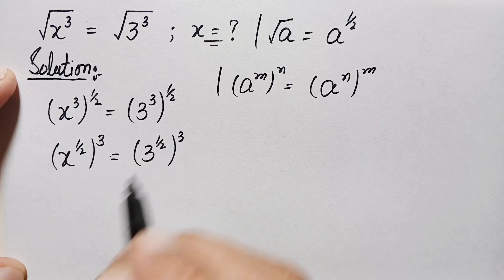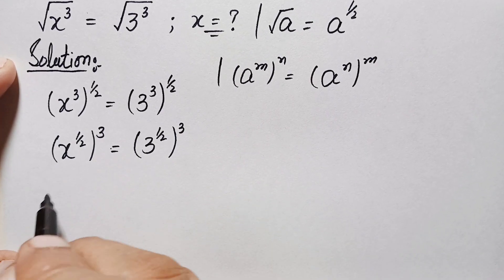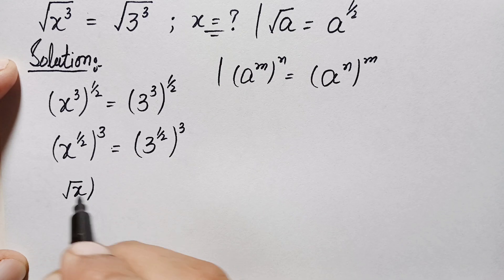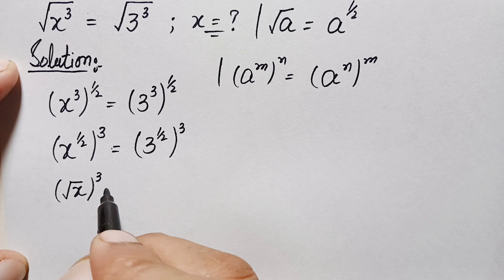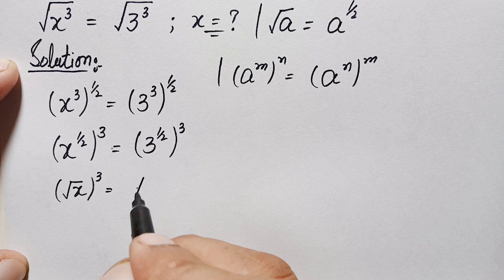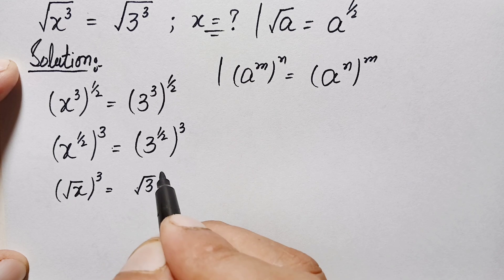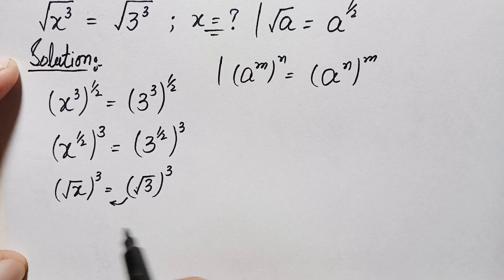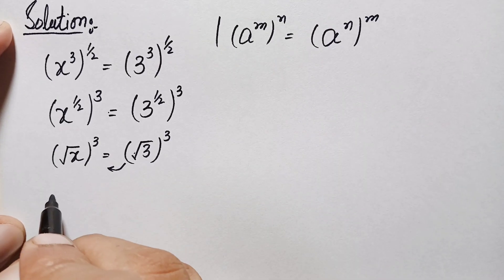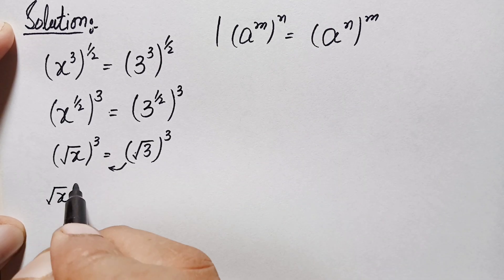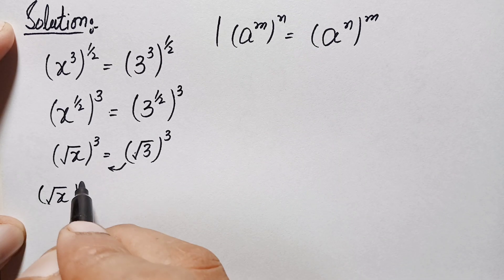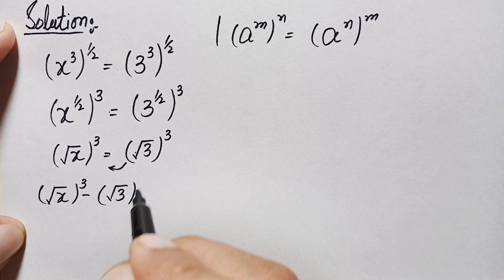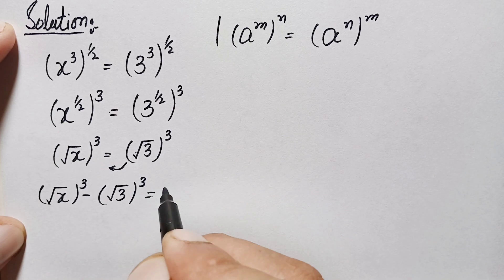We can write the terms inside the parentheses in radical form. This gives us: (√x) cubed is equal to (√3) cubed. Moving the right side to the left, this becomes (√x) cubed minus (√3) cubed is equal to 0.